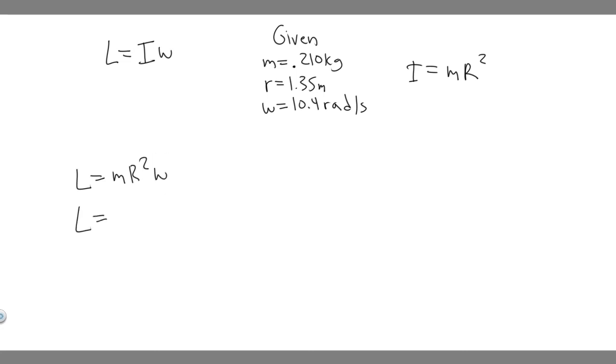So we can just plug in our values now, since we've got it like this. So m, our mass is 0.21, and then multiply that by the radius, which is 1.35. So 1.35 squared multiplied by angular velocity, which is 10.4.